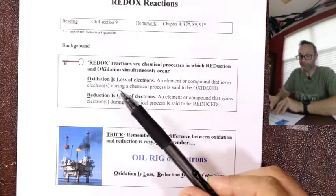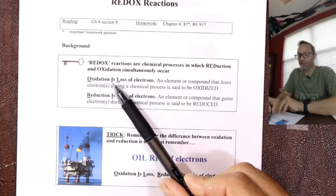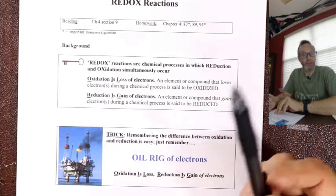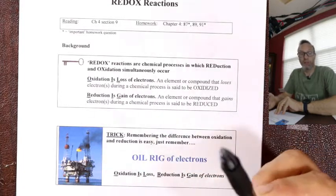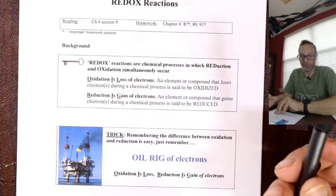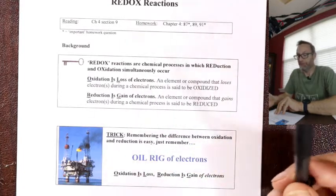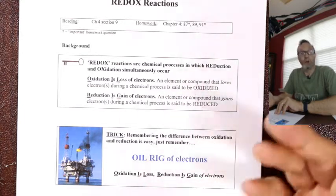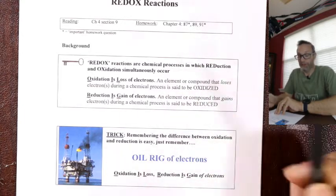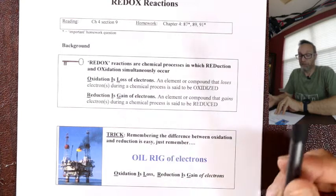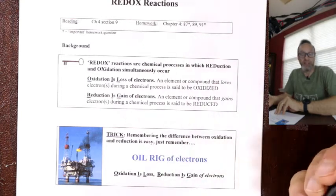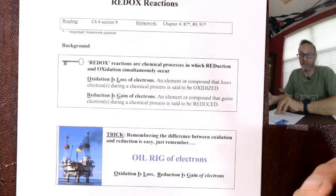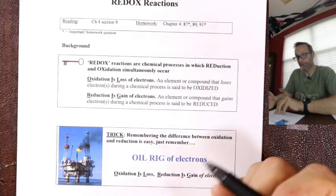Oxidation is the loss of electrons. In that process, sodium would undergo oxidation — anything that loses electrons is said to be oxidized. Reduction is the gain of electrons, so chlorine becomes chloride, gained an electron — chlorine was reduced.